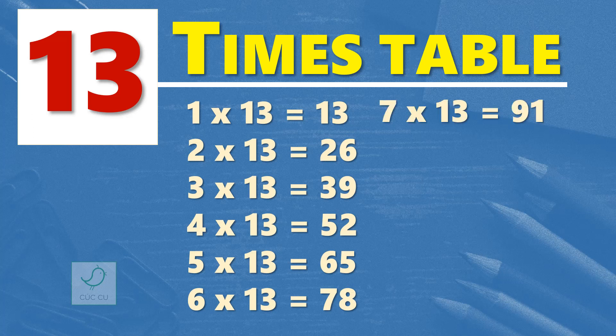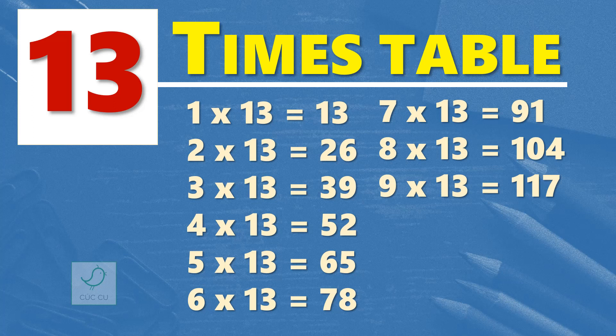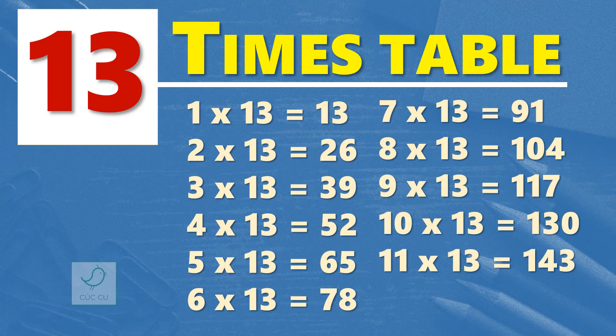7 times 13 are 91. 8 times 13 are 104. 9 times 13 are 117. 10 times 13 are 130. 11 times 13 are 143. 12 times 13 are 156.